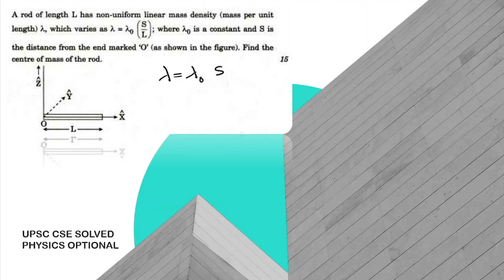Where s is the instantaneous distance from the origin. Let's say we have a rod of length L, and we take a small mass element dm at distance s from the origin.